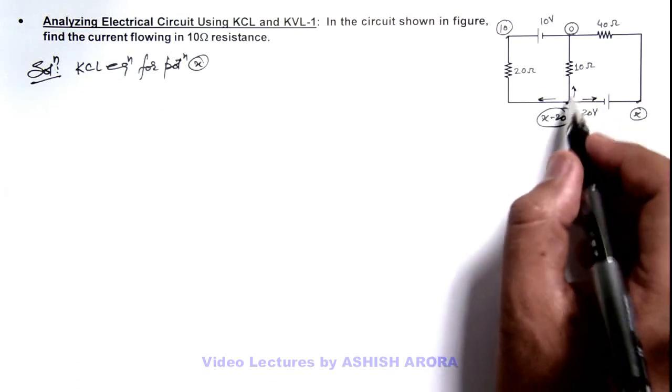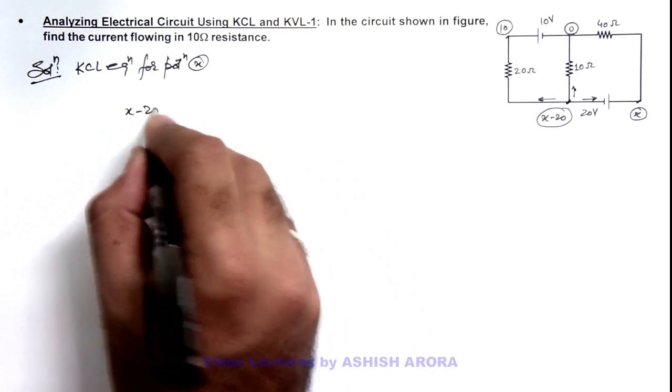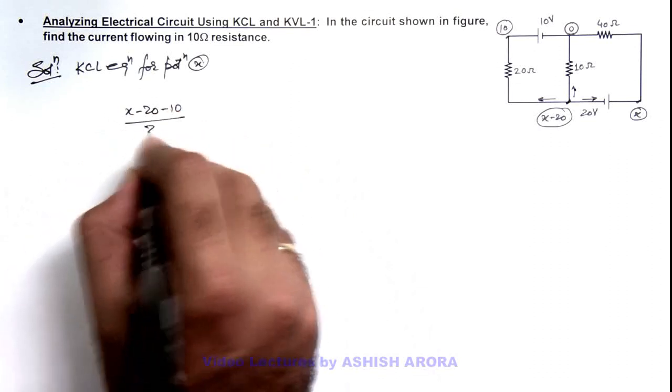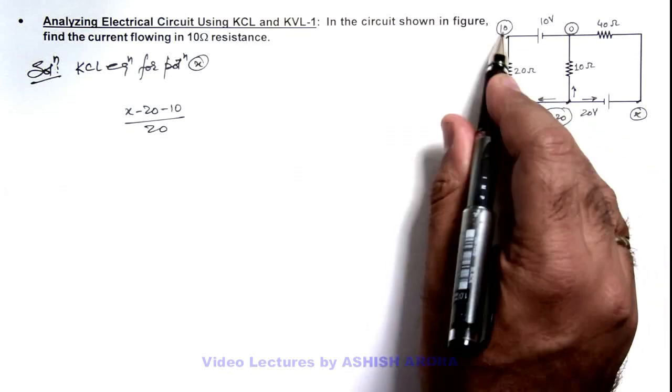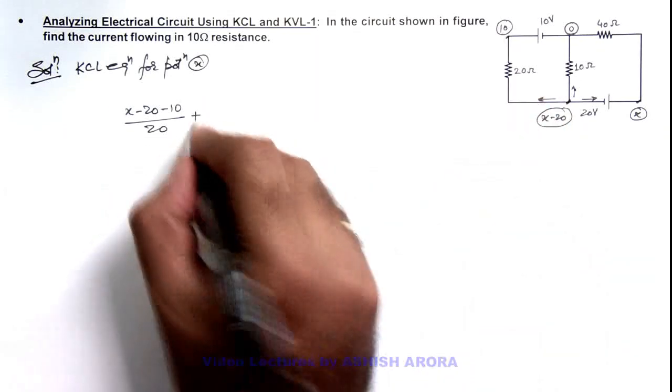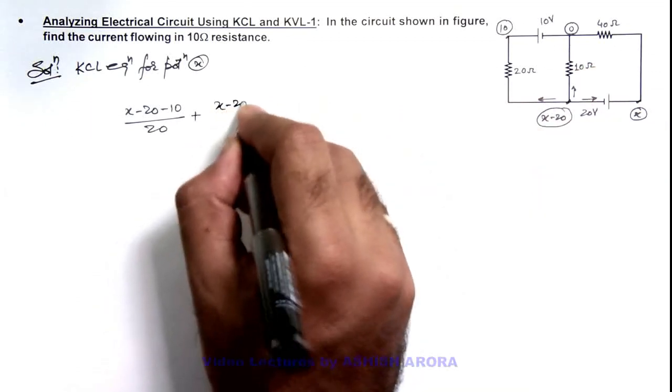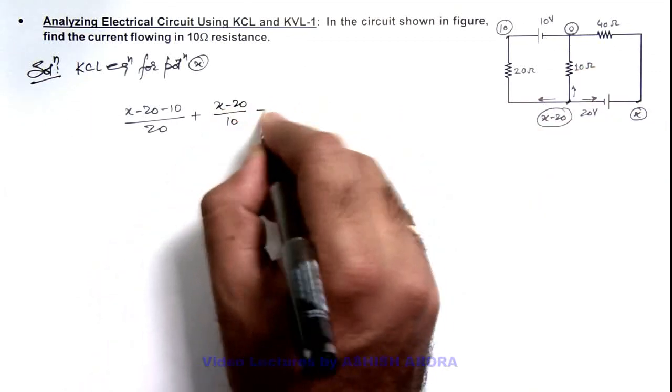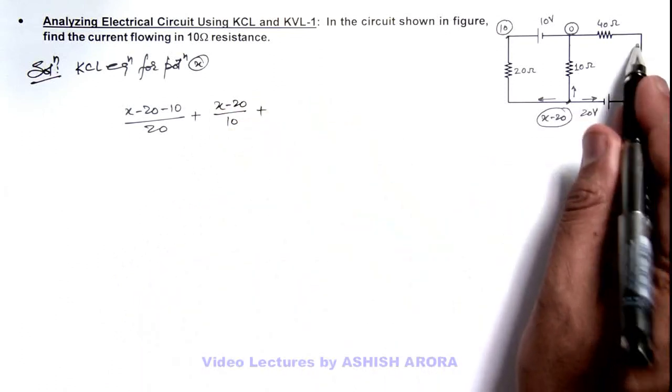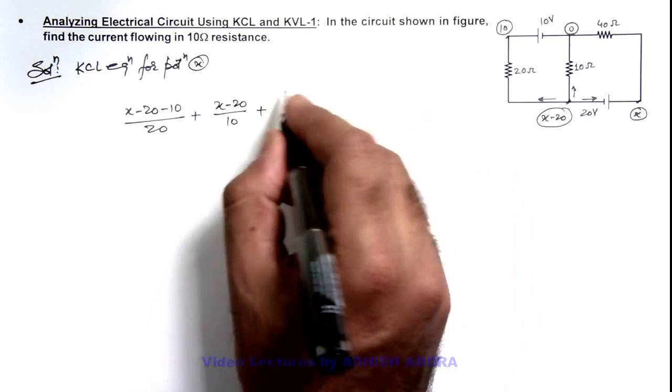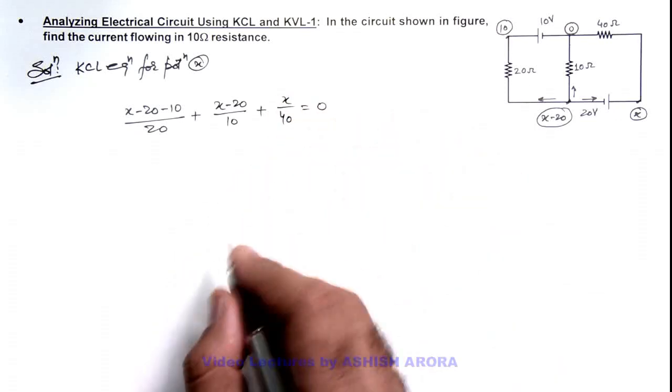So the current which is going in this direction can be written as x minus 20 minus 10 by 20, because here current we can write as potential difference by resistance, plus the current which is going will be x minus zero by 40. So this will be x by 40 and this should be equal to zero.